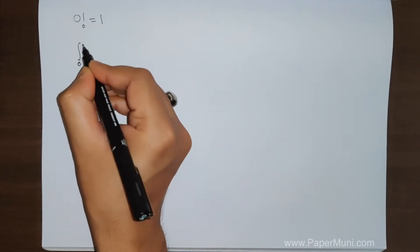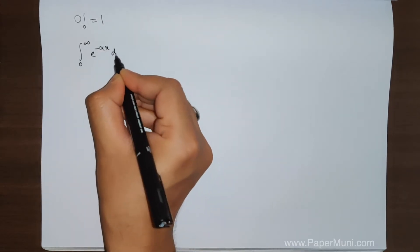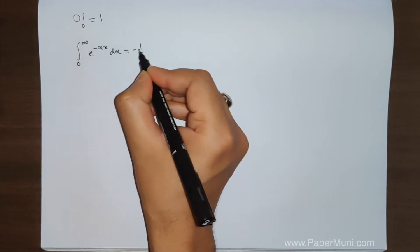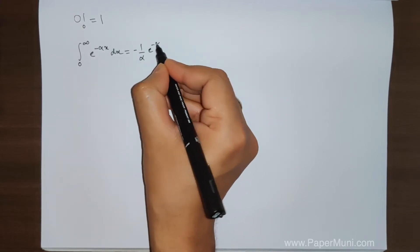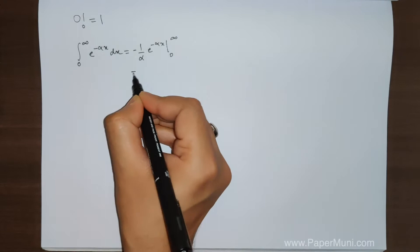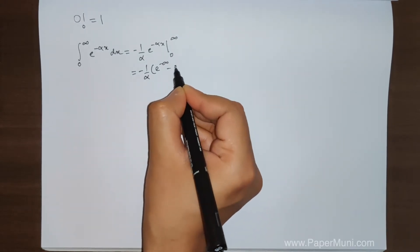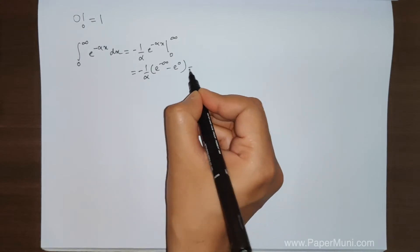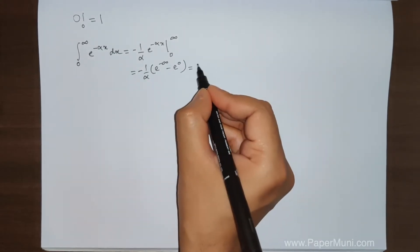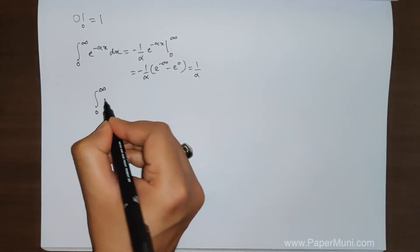It's very simple. It starts with the integral of e to the power minus alpha x dx. If we integrate this, we get 1 over minus alpha times e to the power minus alpha x, evaluated from 0 to infinity. Solving this, e to the power minus infinity becomes 0, and e to the power 0 is 1, so minus times minus gives us plus 1 over alpha. This is the integration result.